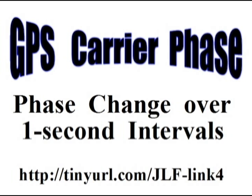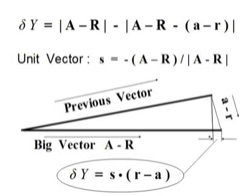Performance under adverse conditions will go way up. When you subtract carrier phase of one second ago from the current value, the change, delta Y, is represented by the difference between magnitudes of the two vectors on the right of the top equation here. Big A minus R is the vector from receiver to satellite A, and little A minus R is the change in that vector from a second ago.